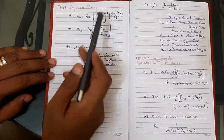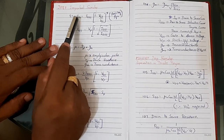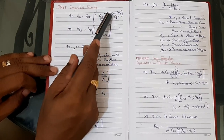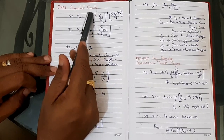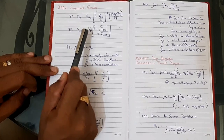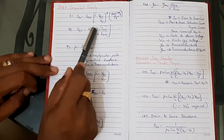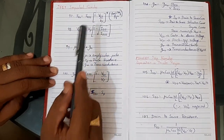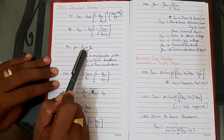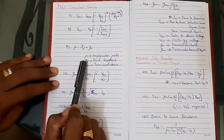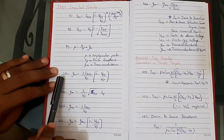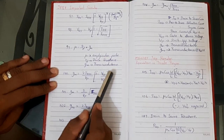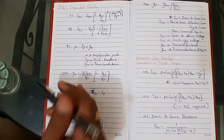JFET important formulas. Number 97: Drain-source current IDS = IDSS × [1 − VGS/VP]² (Shockley equation), where IDSS is the saturation current. Number 98: VGS = VP × [1 − √(IDS/IDSS)]. Number 99: μ = RD × GM, where μ is amplification factor, RD is drain resistance, GM is transconductance. Number 100: GM = (2·IDSS/|VP|) × [1 − VGS/VP].